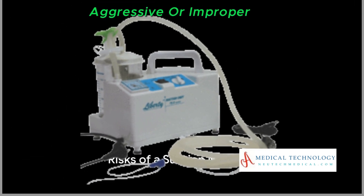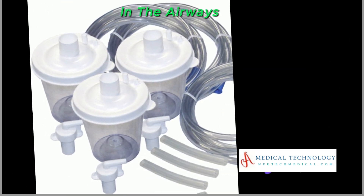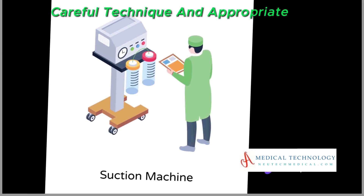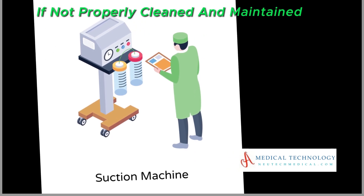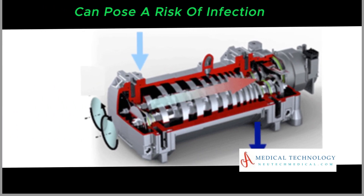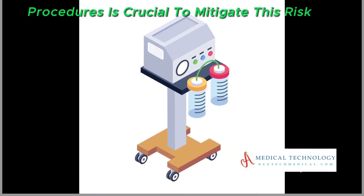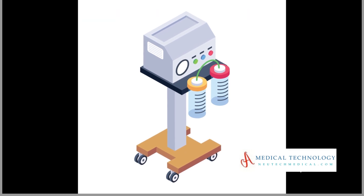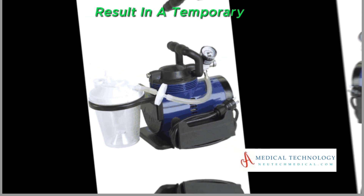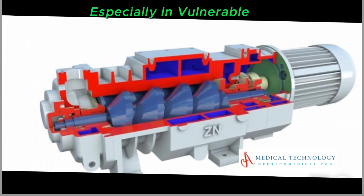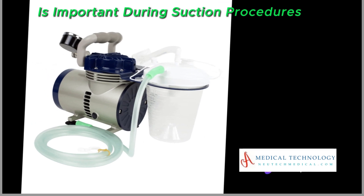Tissue trauma: aggressive or improper suctioning can lead to tissue trauma, causing damage to the mucous membranes in the airways. Careful technique and appropriate suction pressure are essential to minimize this risk. Infection risk: if not properly cleaned and maintained, suction equipment can pose a risk of infection, and strict adherence to hygiene and sterilization procedures is crucial. Oxygen desaturation: prolonged or aggressive suctioning may result in a temporary decrease in oxygen levels, especially in vulnerable individuals, making it important to monitor oxygen saturation levels during suction procedures.